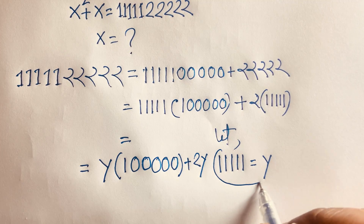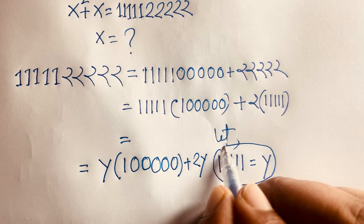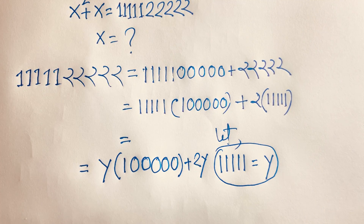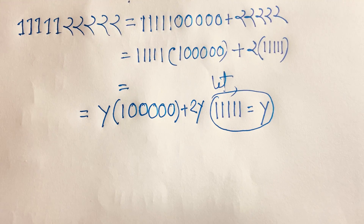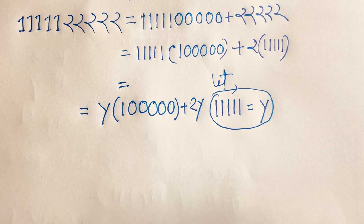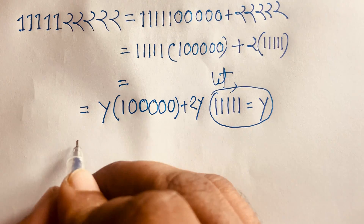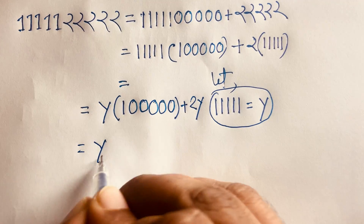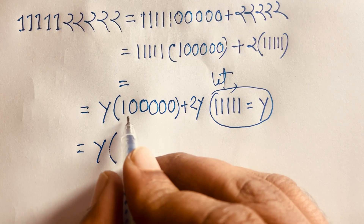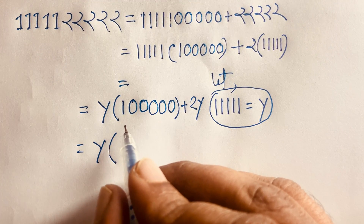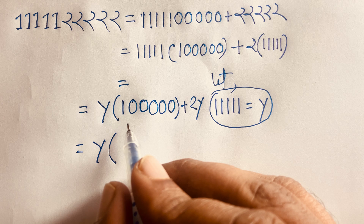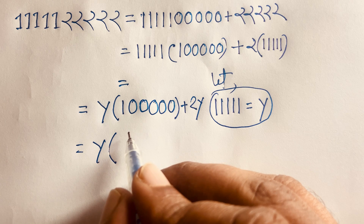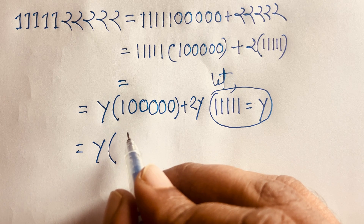So if I take 111111 equal to y, I can see easily y times 100000 plus 2y — because of that 11111 — we get 90111 and here is 111111 by one and here is 2y.